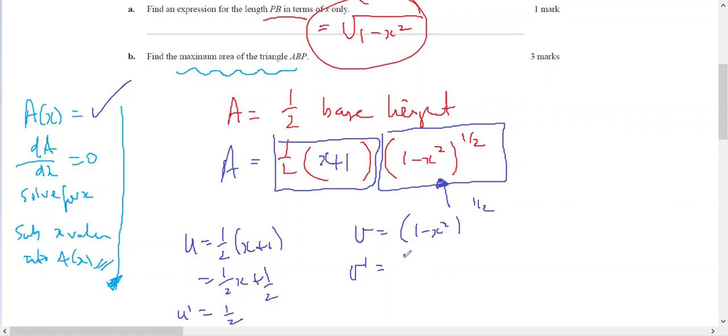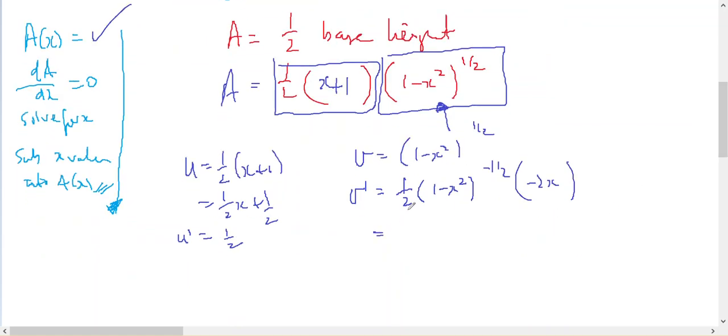So v dash involves a chain. I've got something to the power of a half. So a half, 1 minus x squared to the negative of a half. And then on the inside I've got minus 2x, which means the 2 and the half will cancel. So leave minus x, 1 minus x squared to the negative of a half.